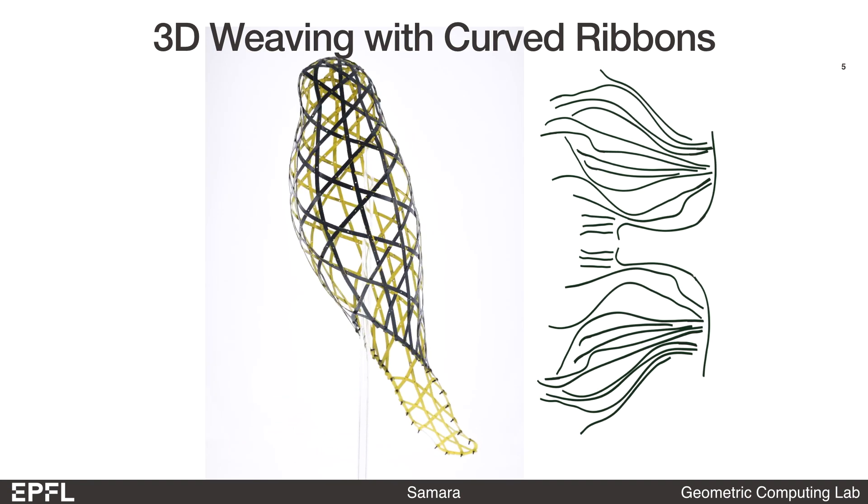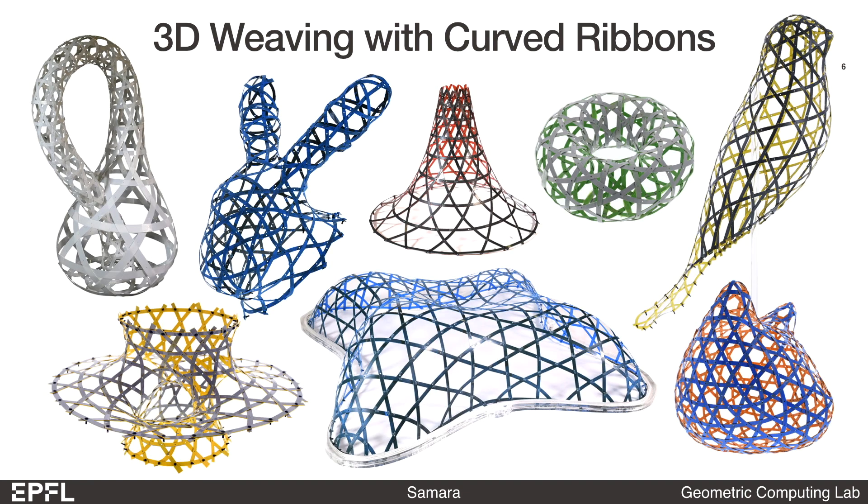Once our algorithm finds the optimal set of ribbons, the fabrication process to obtain the 3D target shape is straightforward. We were able to produce a variety of doubly curved freeform woven surfaces. Our framework can handle non-orientable surfaces and open boundaries.